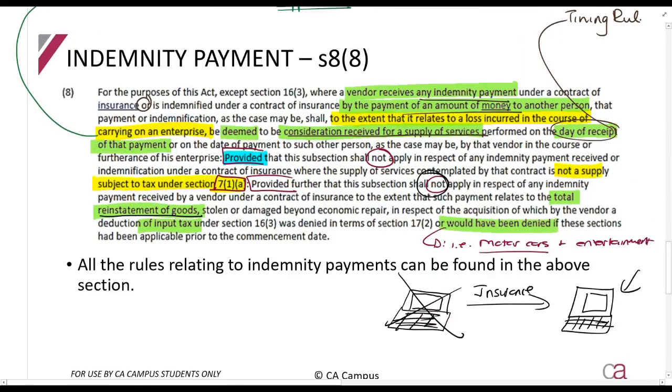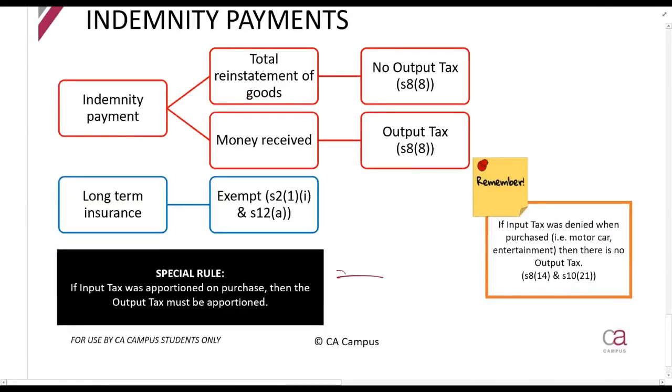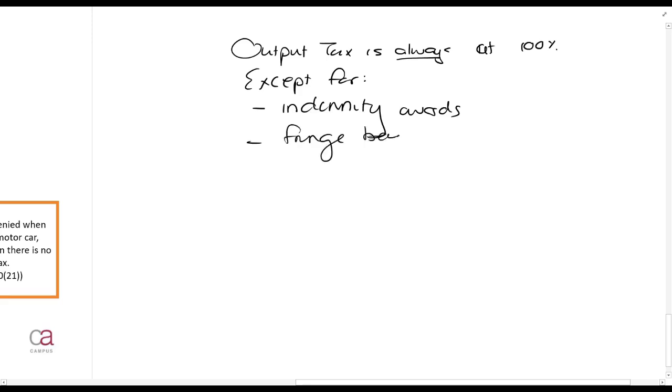Now that's it, guys. If you understand that, you understand the majority of the section. Now I said here, where it says to the extent it relates to a loss in the carrying of an enterprise, I said you must apportion. You will remember that output tax is always calculated at 100% except for indemnity awards - this is what we are looking at now - fringe benefits, and change in use.